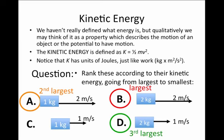The third largest kinetic energy will be answer D. In this case, the velocity is 1 meter per second. And so if I square that, that's still 1. I multiply by 2, and I have 2. But I must multiply by 1/2, and so I have a kinetic energy overall of 1 joule.